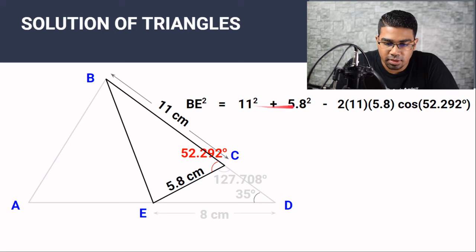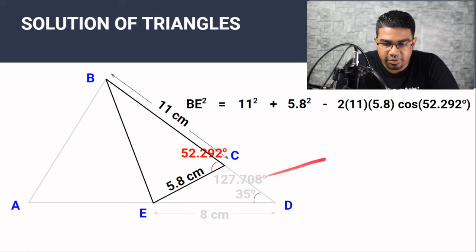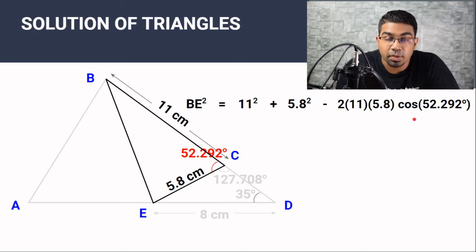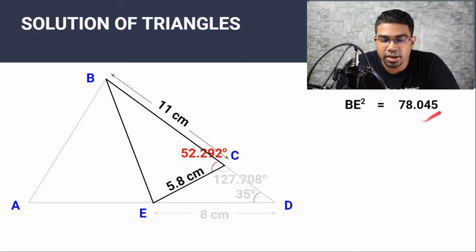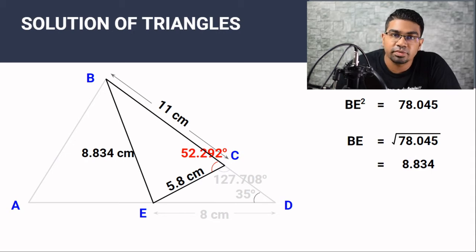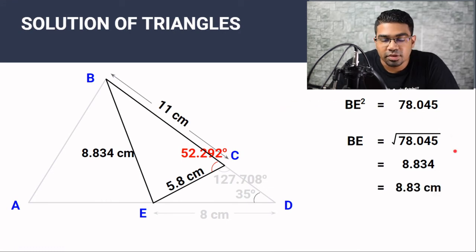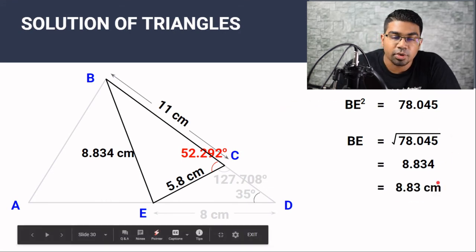Let's put in all the values. We have 11² plus 5.8² minus 2 times 11 times 5.8 times cos 52.292. Working this out, BE² equals 78.045, and BE equals the square root of that, which is 8.834. So we have the length of BE as 8.834 centimeters. Answers are normally given to 2 to 3 significant figures, so BE = 8.83 cm.